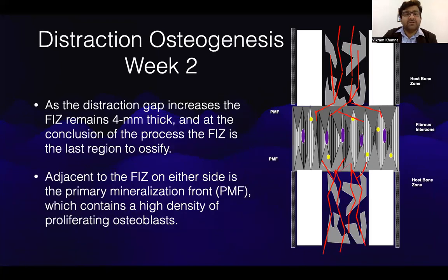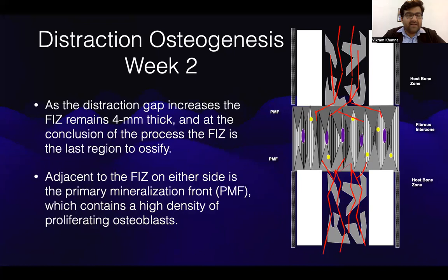During distraction osteogenesis week 2, as the distraction gap increases, the fibrous interzone remains 4 mm thick. At the conclusion of the process, the fibrous interzone is the last to ossify. Adjacent to the fibrous interzone on each side is the primary mineralization front, which contains a high density of proliferating osteoblasts.